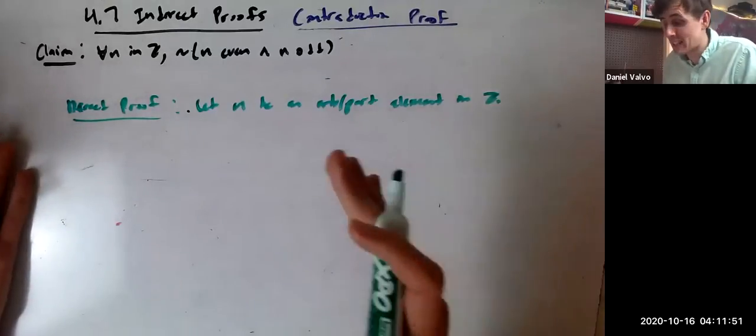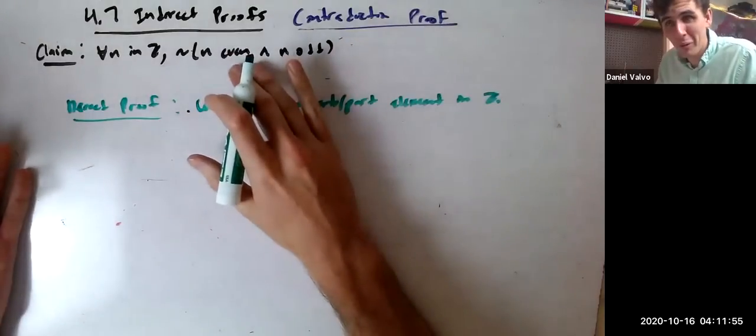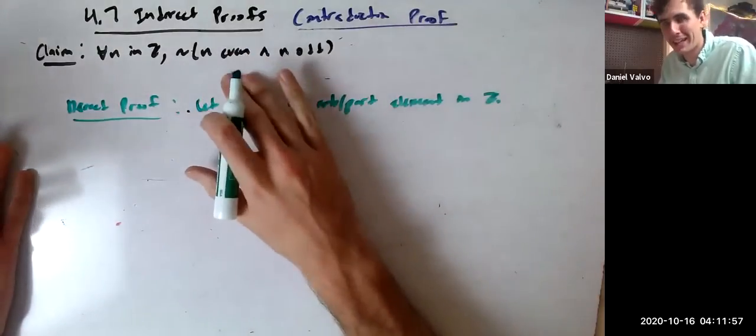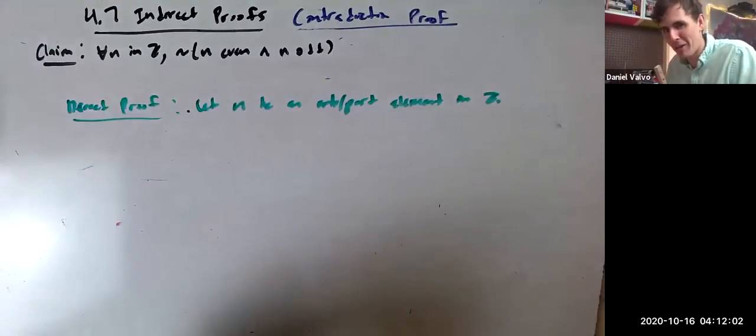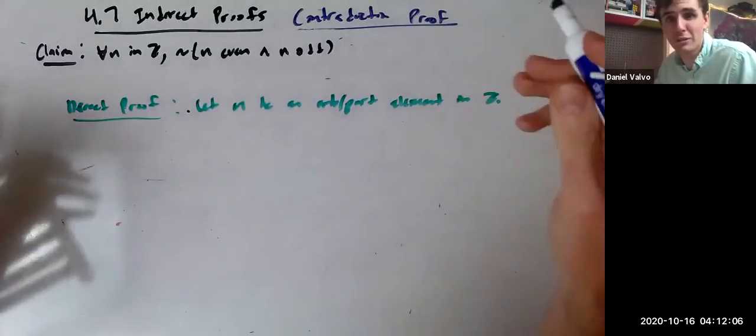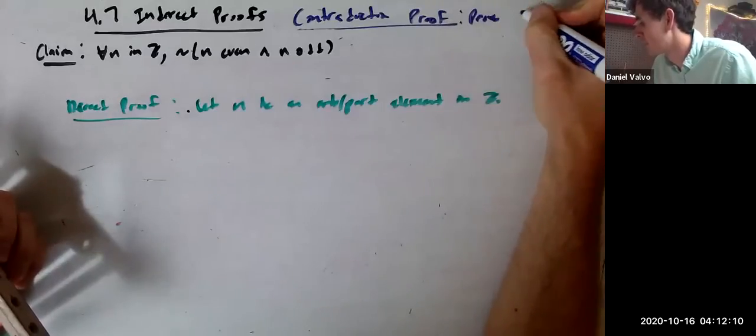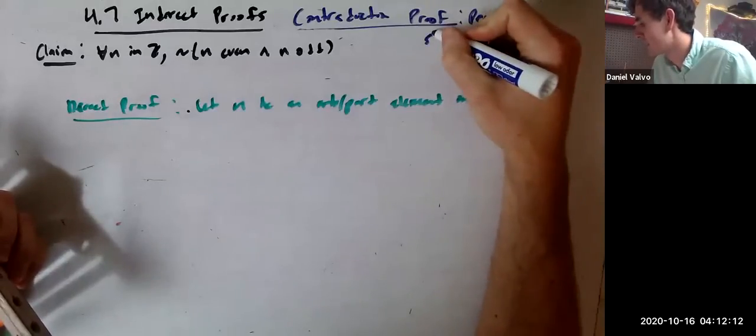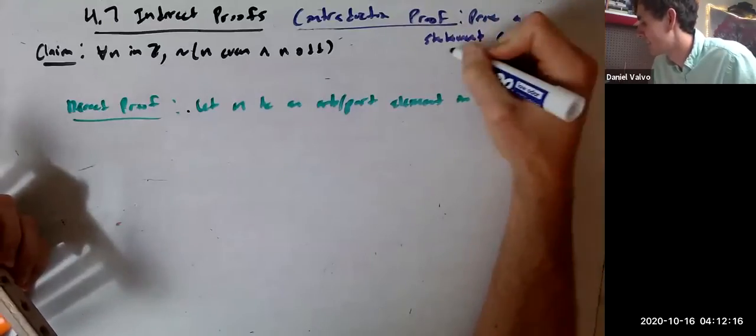Here's where the contradiction idea comes in. What if, instead of proving this is true, we prove that it can't not be true? It's subtle, but it helps. Contradiction proof: prove a statement can't not be true.